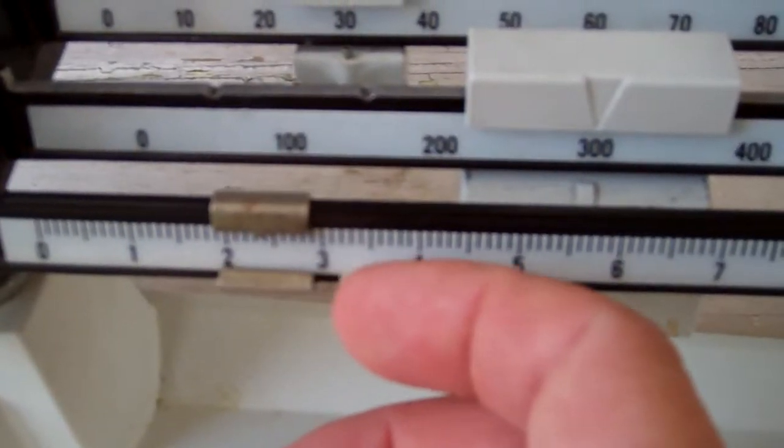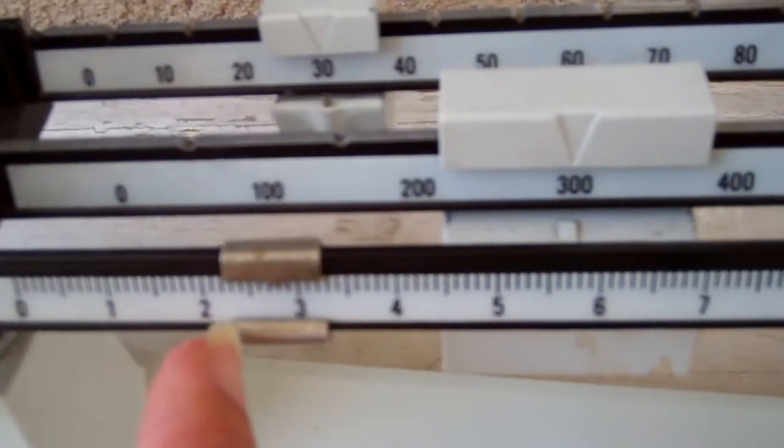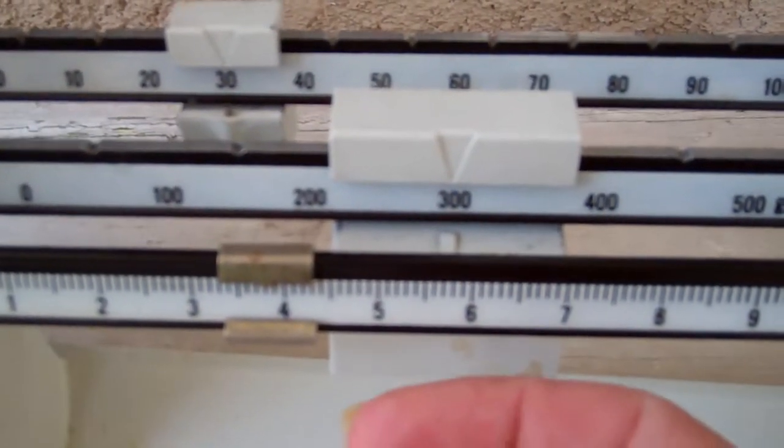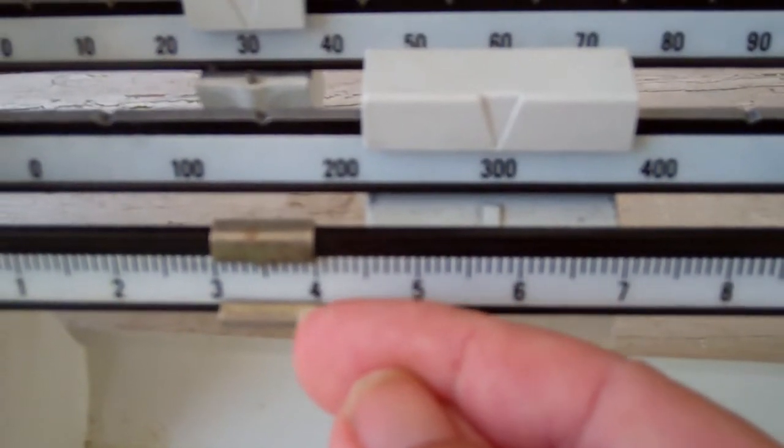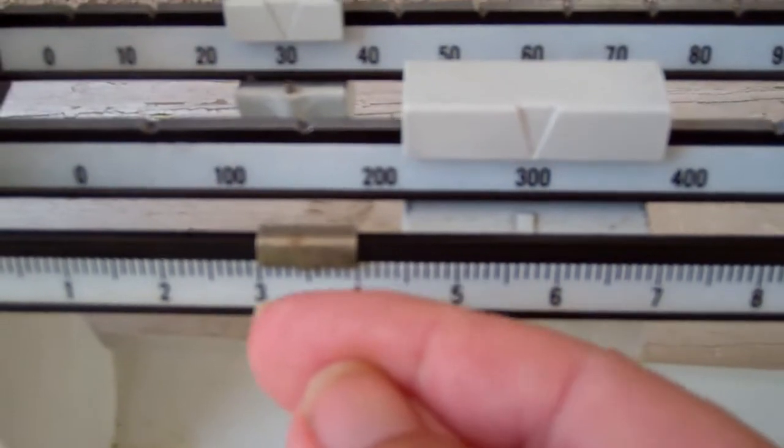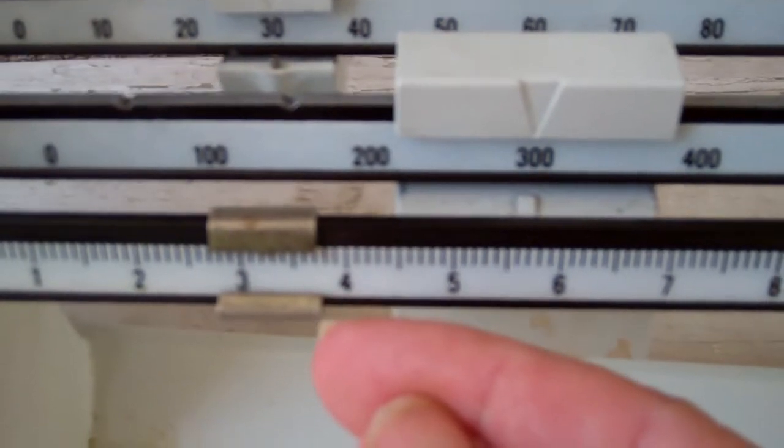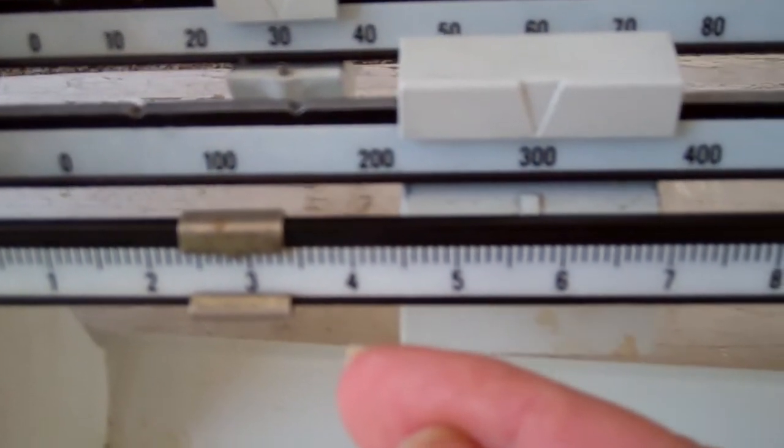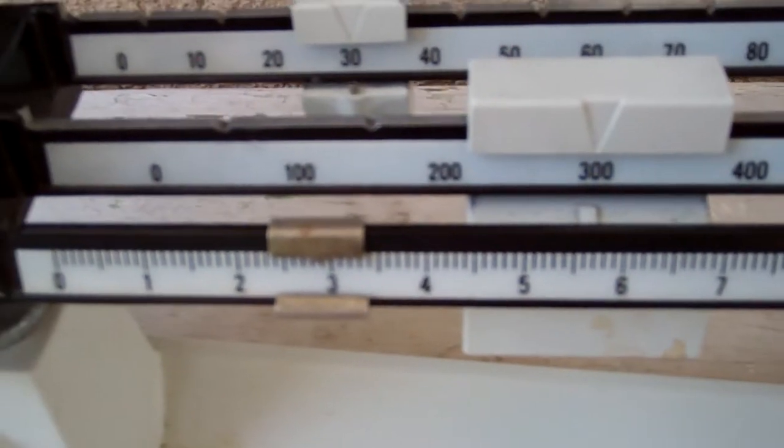Then you have to move these things back and forth until you've narrowed down and gotten those two lines to be zeroed out and match the line up. Now this front rider does not have notches. It rides back and forth on that beam smoothly with no bumps so that you can do these fine adjustments. You're making adjustments that are less than a gram.